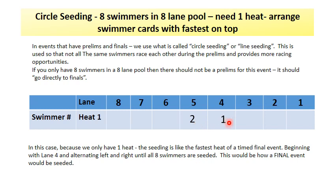The third fastest swimmer would then go on the right of the faster swimmer in lane three, and you would keep on alternating left and right until the heat is full.